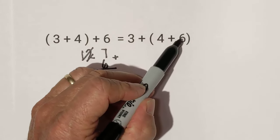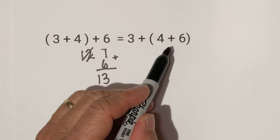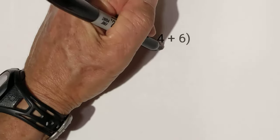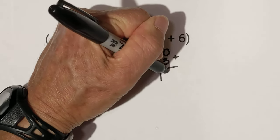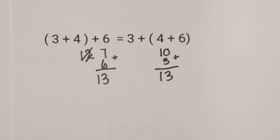On this side, 4 plus 6, remember your order of operations, always parentheses first, is 10, plus 3 is 13. Notice that they are equal.